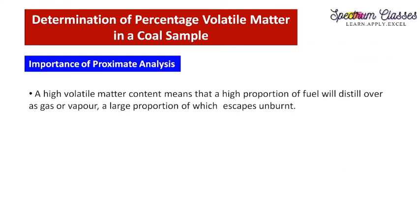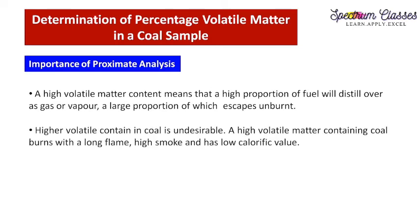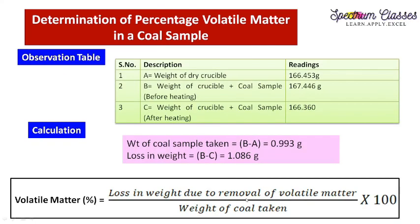The importance of measuring volatile matter in the coal sample is that high volatile matter content means a high portion of fuel will be distilled over as gas and vapors — it vaporizes first, and a large portion escapes unburnt, so the fuel value of the coal sample will be less. It is undesirable to have high volatile content. Lesser volatile matter means better fuel value or calorific value of the coal sample.